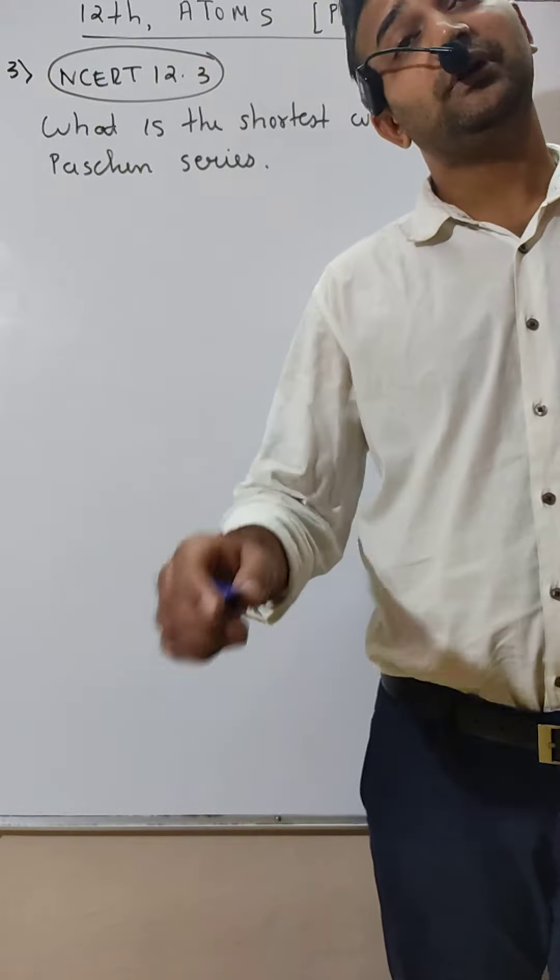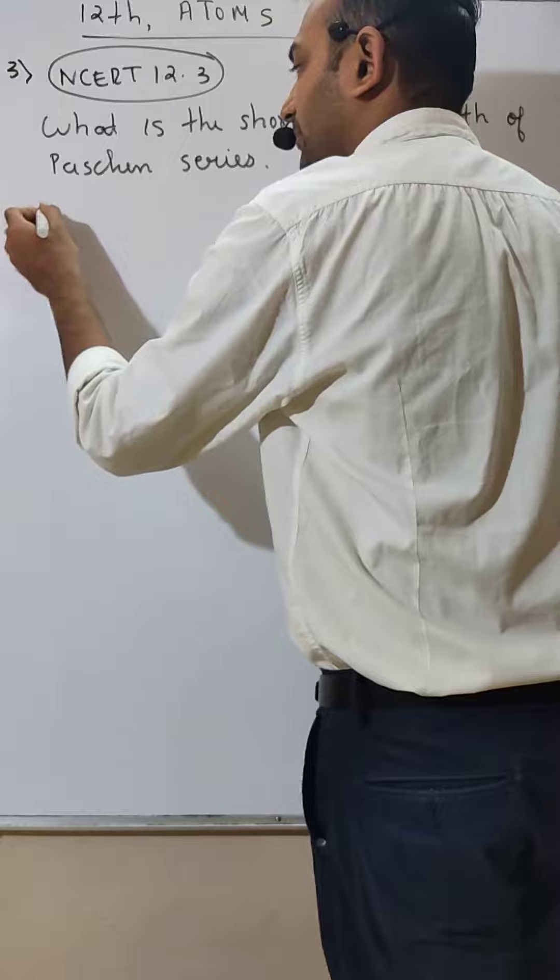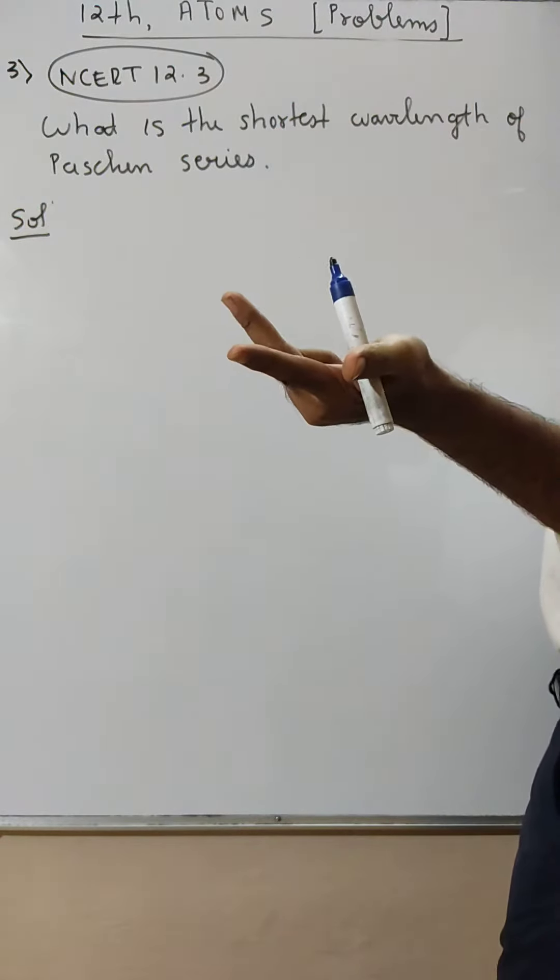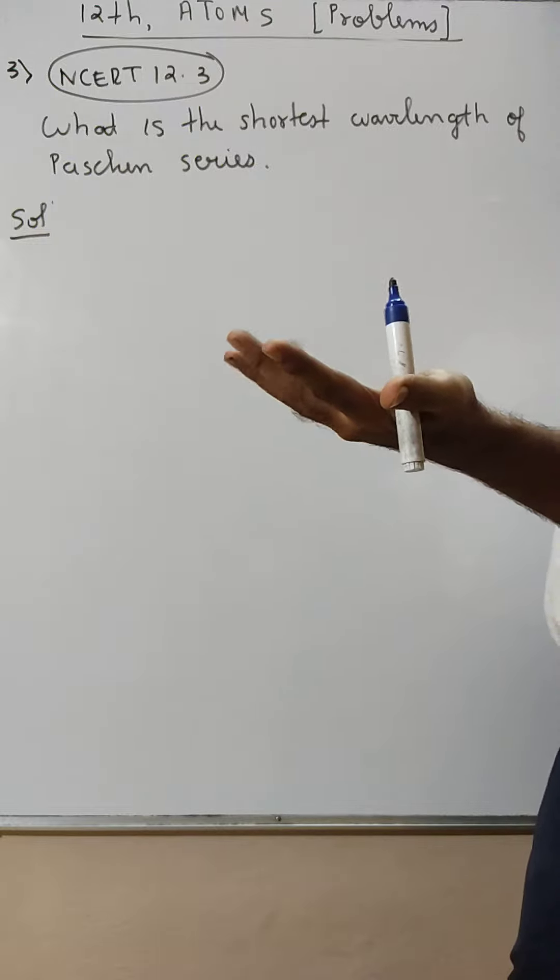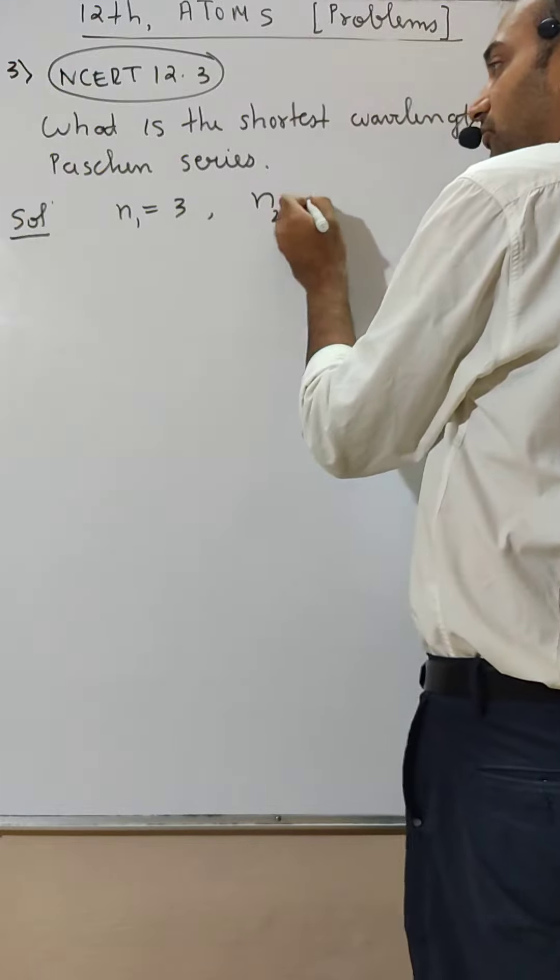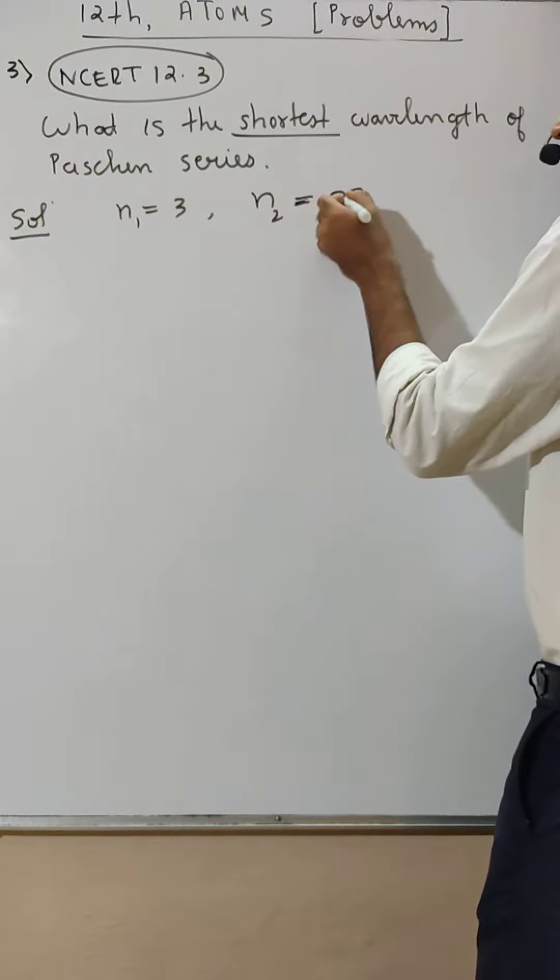The shortest wavelength of Paschen series: n1 is 3, n2 is infinity for the shortest wavelength of Paschen series, means anant (infinity).